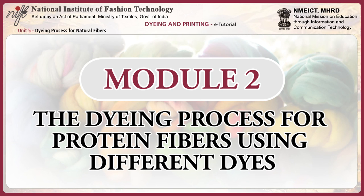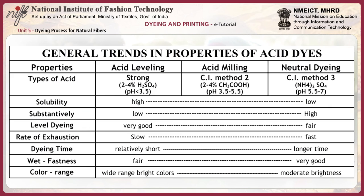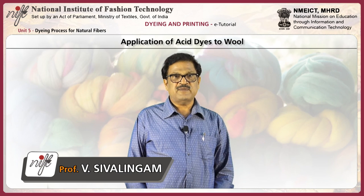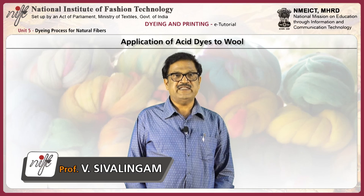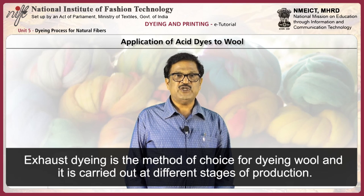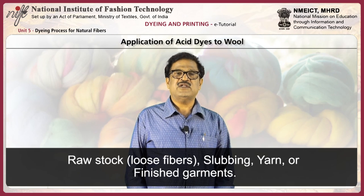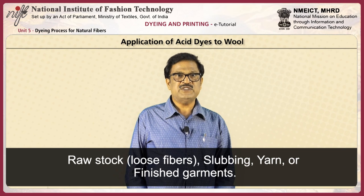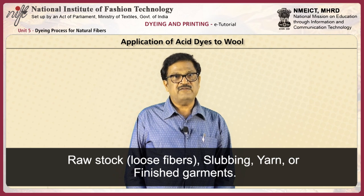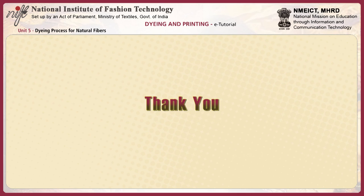Next, we will learn about the dyeing process for protein fibers like wool and silk using different classes of dyes. This table displays the general trends in properties of acid dyes. Application of acid dyes to wool: The dyeing procedure for acid leveling dyes. Exhaust dyeing is the method of choice for dyeing wool, carried out at different stages of production — either raw stock (loose fibers), slubbing (roving), yarn, or finished garments.